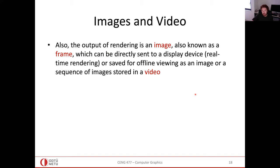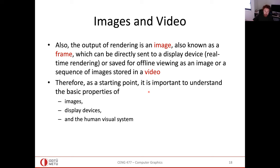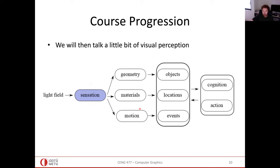The output of rendering is an image, also known as a frame, which can be directly sent to a display device or saved for offline viewing. In computer graphics, we call each image a frame, and a set of frames makes up a video. This connects us to the next set of slides about images, display devices, and the visual system.